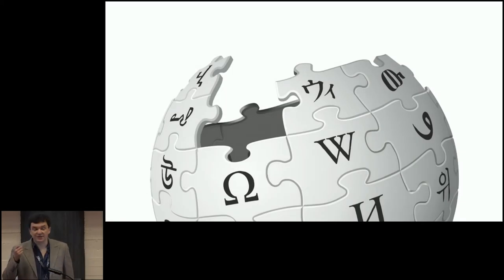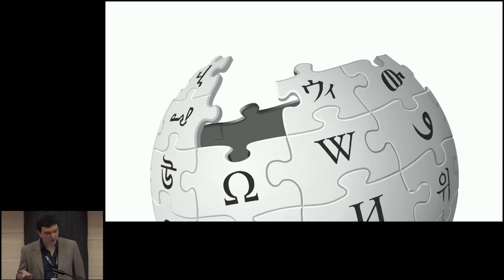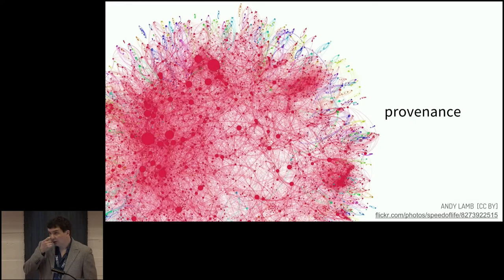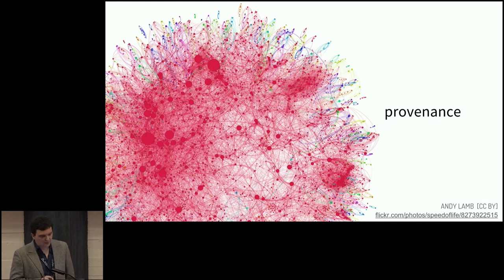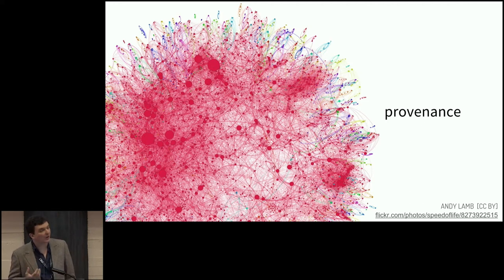This is what makes citations and references so critical for Wikipedia. And if this is true for Wikipedia, it should be even more true for scholarly knowledge at large. After all, science is, at scale, the largest example of collaboratively created knowledge production. The citation graph underpins our collective understanding of where scholarship comes from. It allows us to understand knowledge provenance — how we know what we know in science and the evolution of scientific debates.